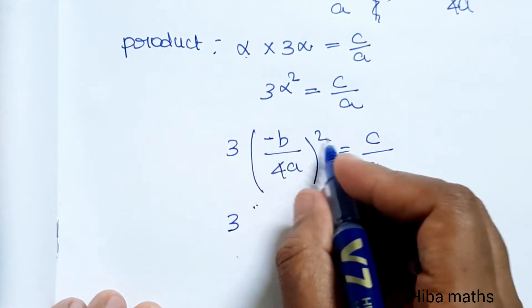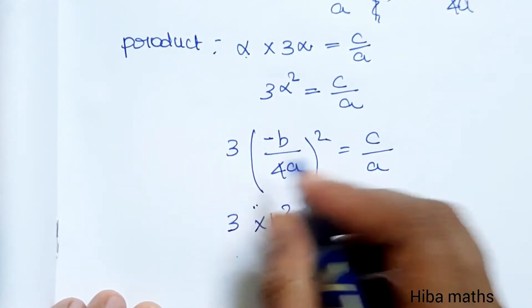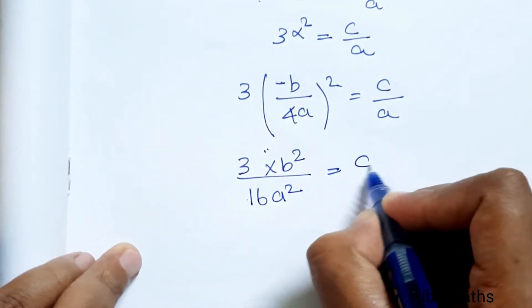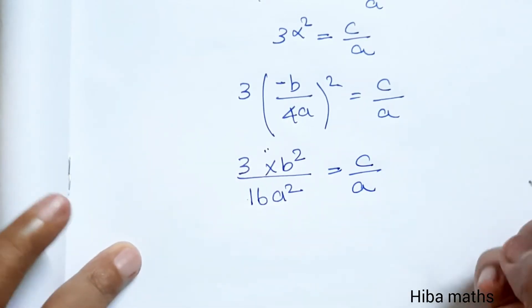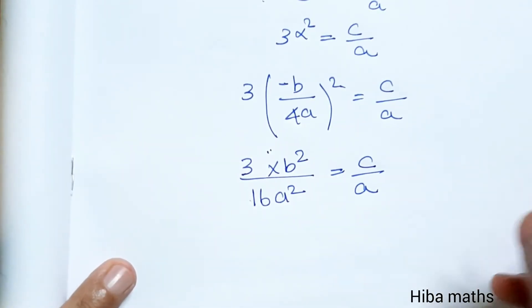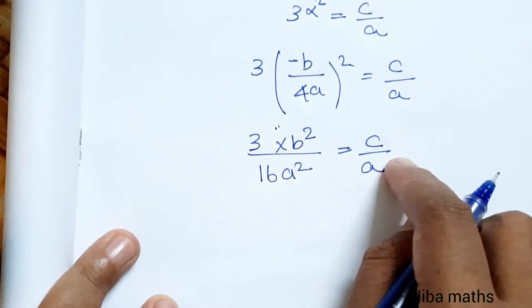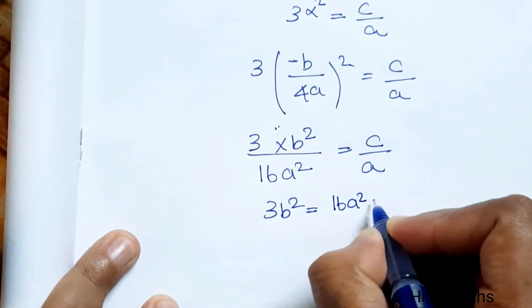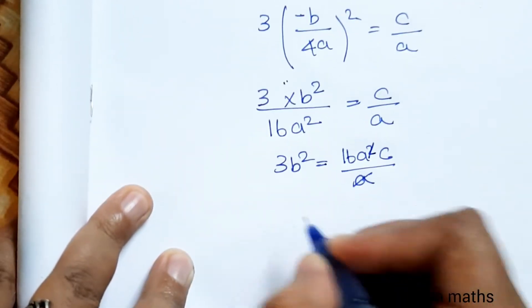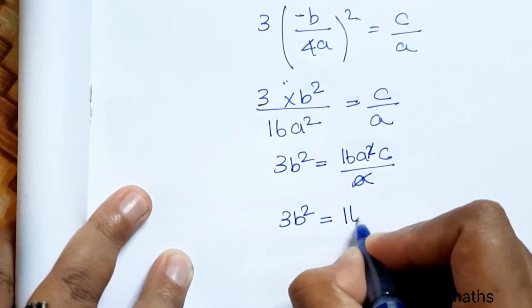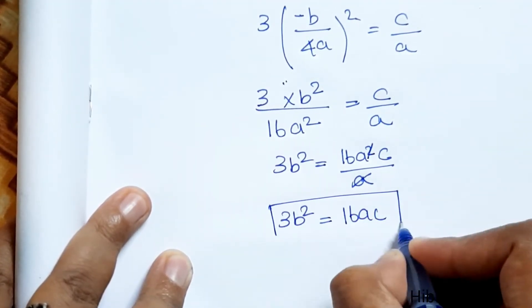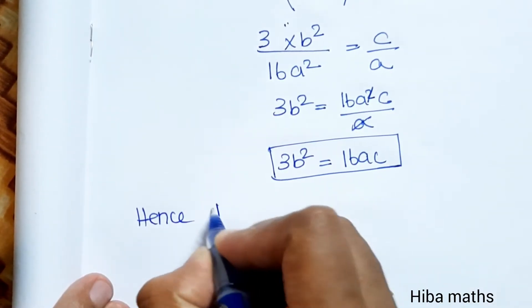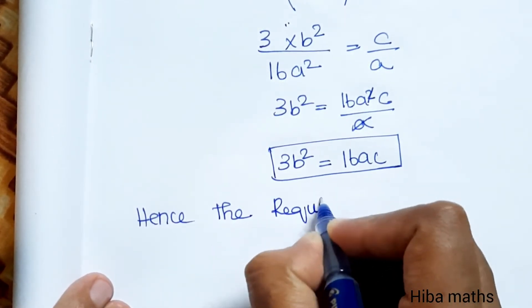Expanding: 3 × B²/(16A²) = C/A. Multiplying both sides by 16A²: 3B² = 16AC. Hence the required condition for one root to be thrice the other is 3B² = 16AC.